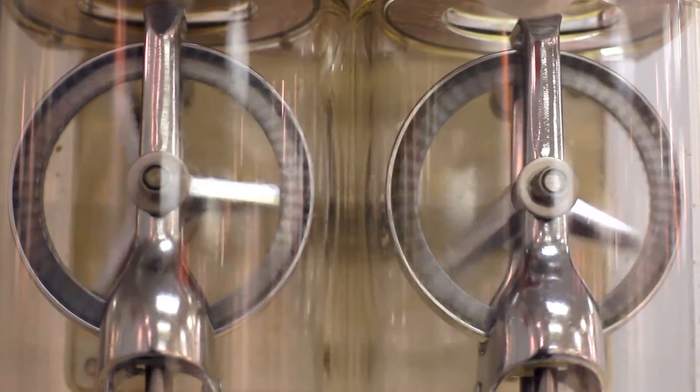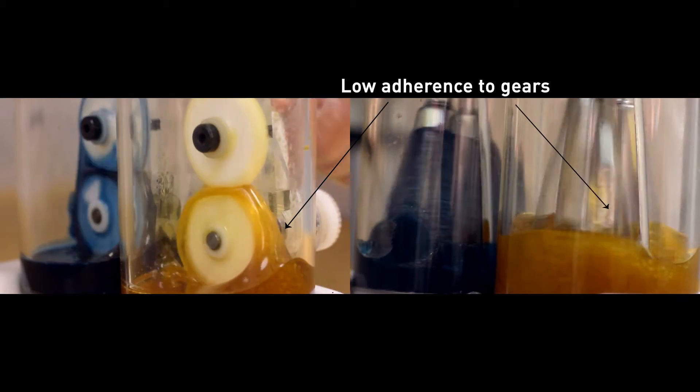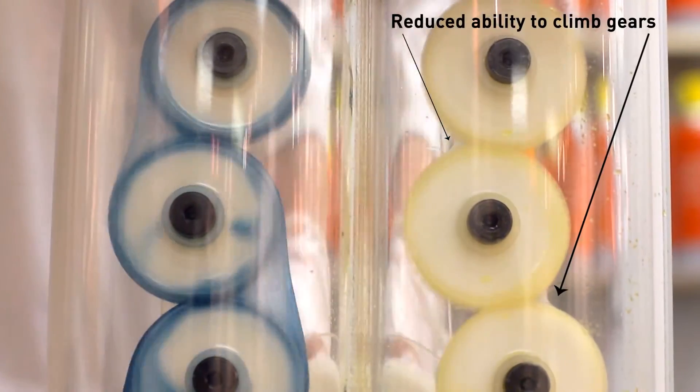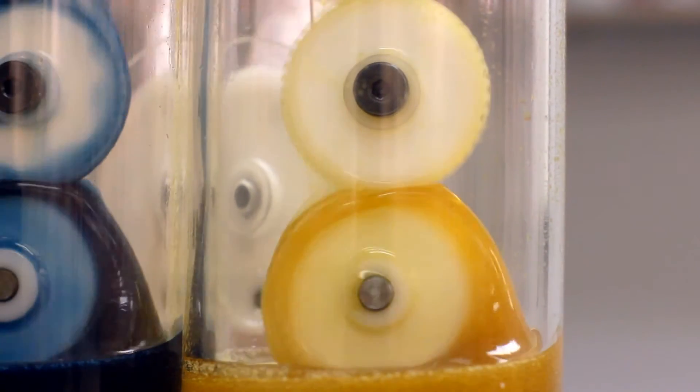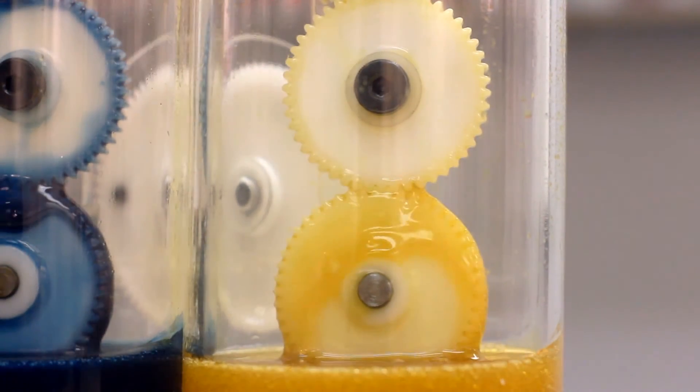Observe how the competitors' product exhibits low adherence to gears, reduced ability to climb the gears, high fling off, and high level of foaming. Most critically, the competitor product subjects the gears to greater potential wear during startup.